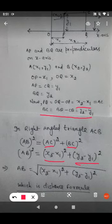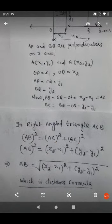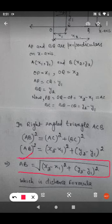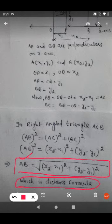Now, taking square root both sides, we will get AB is equal to square root of x2 minus x1 whole square plus y2 minus y1 whole square. And which is the distance formula because it is showing the distance between point A and point B.